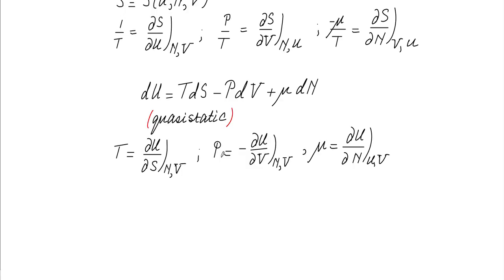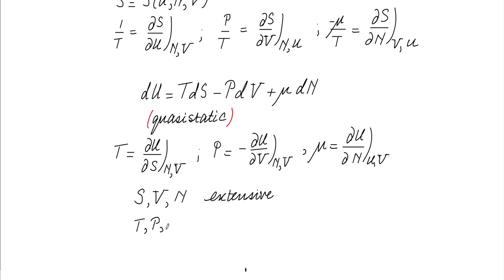The parameters S, V, and N are the ones we fix for an isolated system, and they are extensive. That means if we double the size of the system, S goes to 2S, V becomes 2V, and N becomes 2N. It's the opposite with T, P, and mu — they are intensive, meaning they are independent of the size of the system.